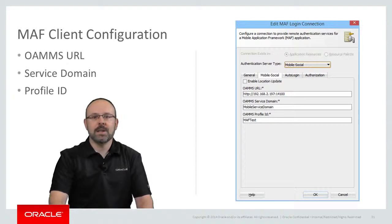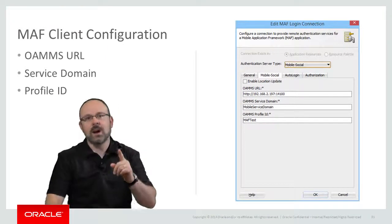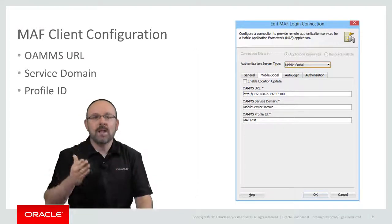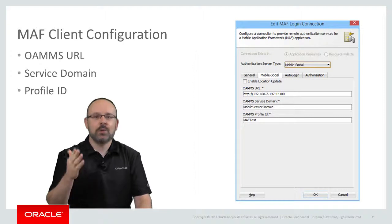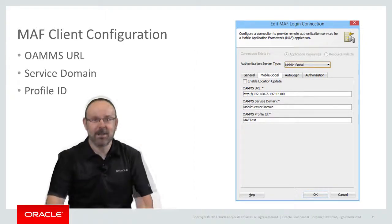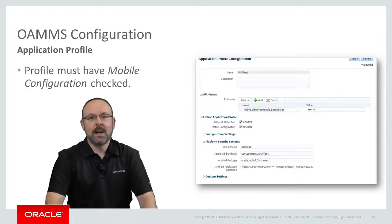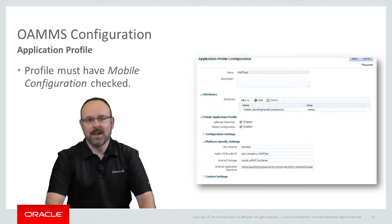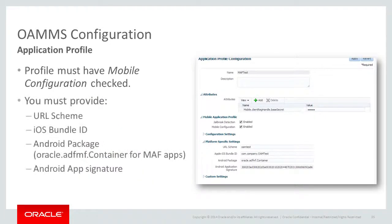I will now review the various settings you must select when defining service domains and application profiles to be used by MAF applications. My aim is not to demonstrate how to manage OAMMS, but rather to explain what you should ask an administrator in order to fulfill the requirements of a MAF application. We start with the application profile. The first step is to ensure that the mobile configuration option is checked — you will find it in the mobile application profile section. Then it is essential to fill the platform-specific settings section accurately. The values there must match the ones defined in the deployment profile of your MAF application exactly. The first two are the application's URL scheme and iOS bundle ID.